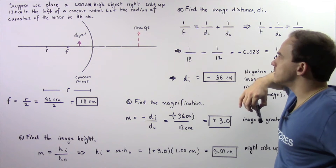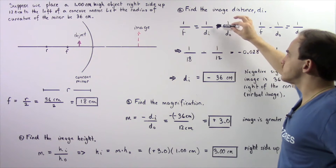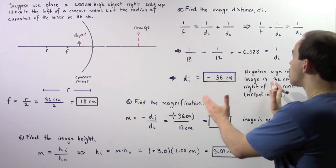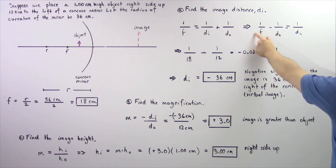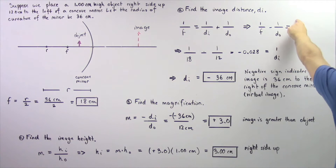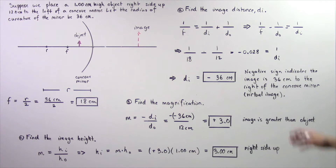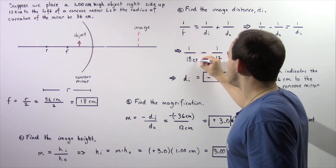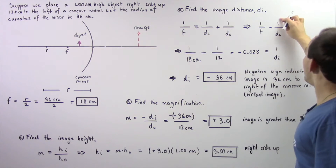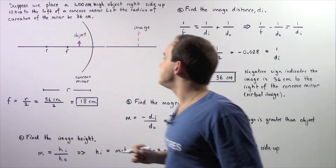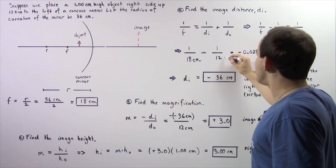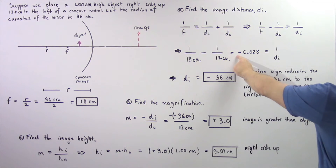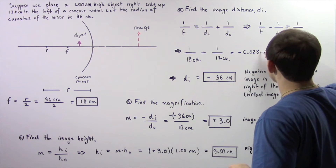The mirror equation states: 1 divided by the focal distance equals 1 divided by the image distance plus 1 divided by the object distance. Rearranging to bring known values to the left side: 1 divided by F minus 1 divided by the object distance equals 1 divided by the image distance. So 1 divided by 18 centimeters minus 1 divided by 12 centimeters — plugging this into our calculator gives approximately negative 0.028 centimeters to the negative 1.